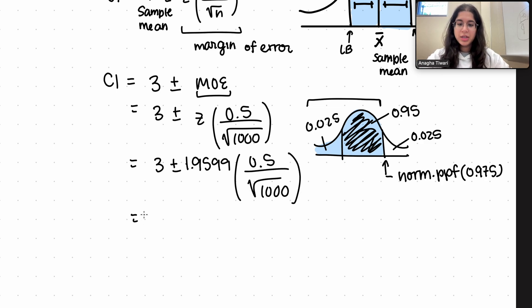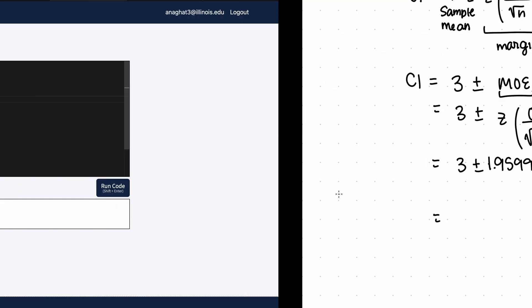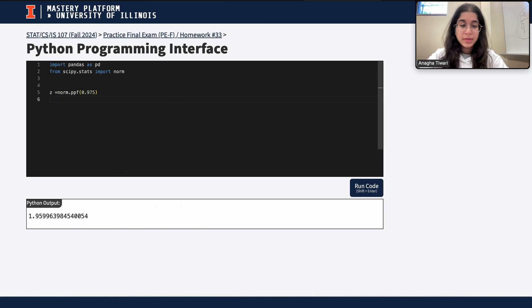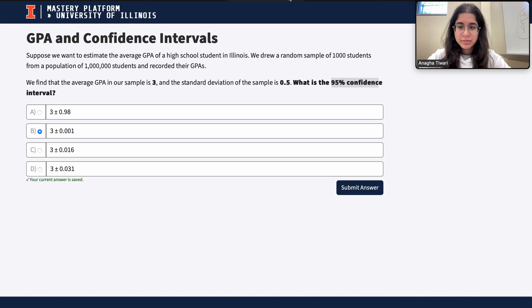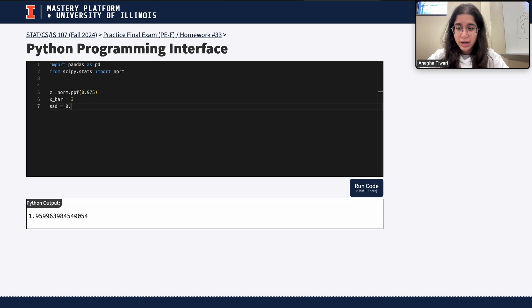If you want you can calculate this in Python, so I like to name my variables. I can have x bar equals 3, and our sample standard deviation is going to be 0.5.